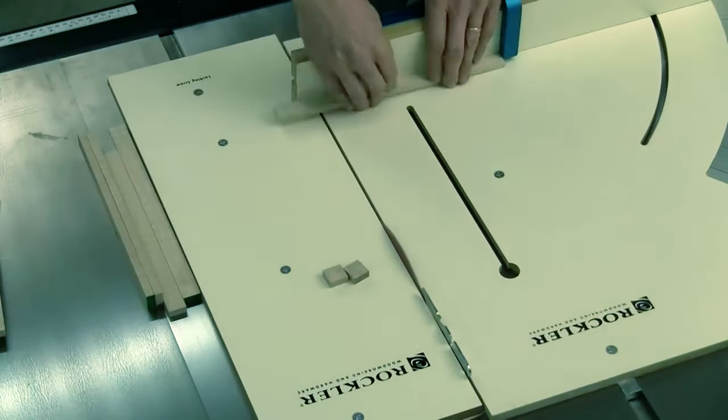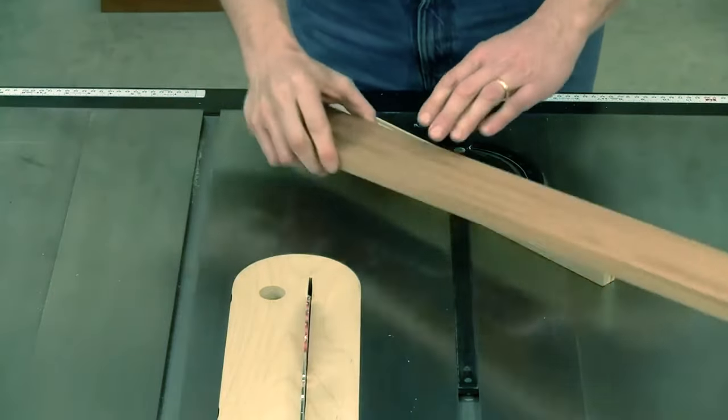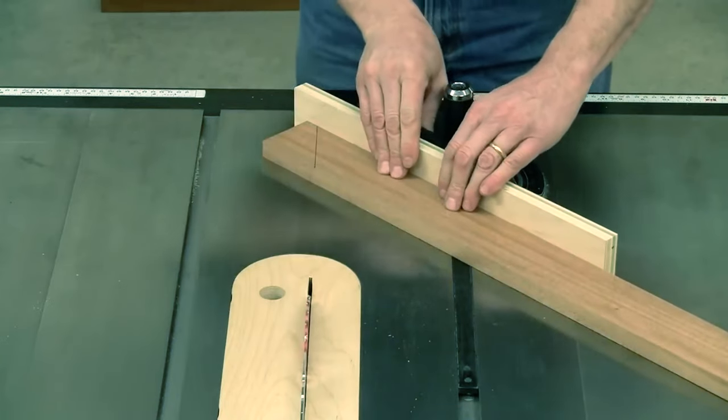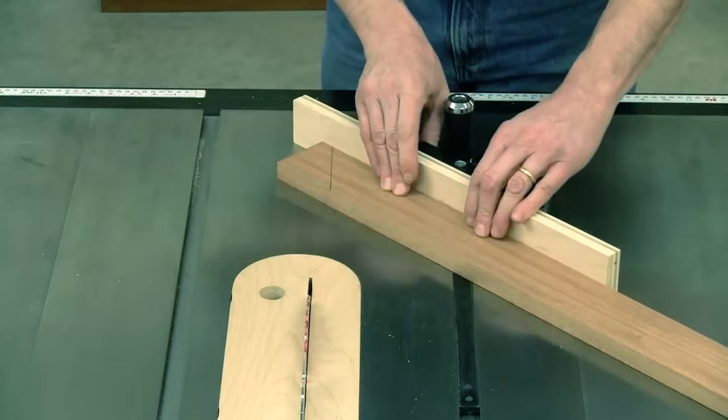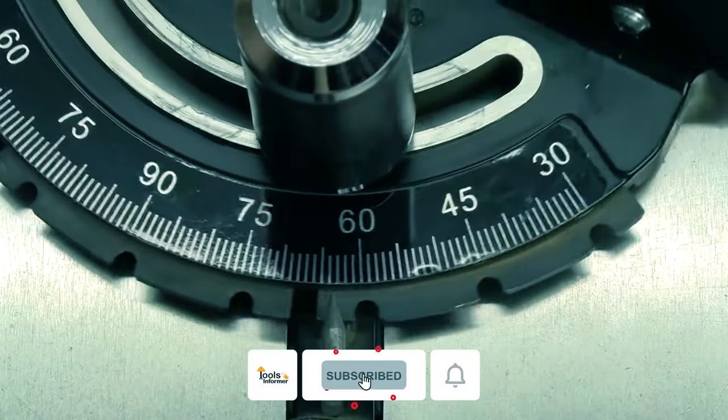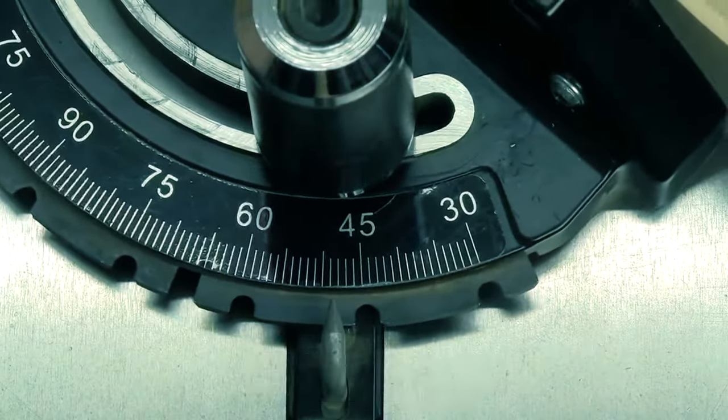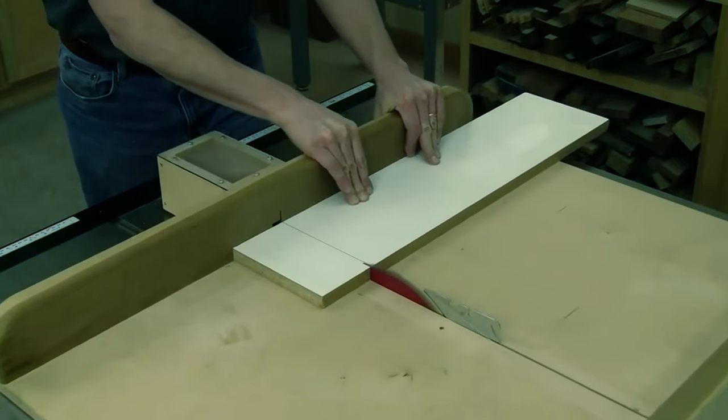Built for constant repetitive use, the durable aluminum sled won't swell or absorb moisture. It fits most woodworking table saws, making it a versatile addition to your workshop. With a miter track stop for controlled forward travel, this sled is a game changer for precision cutting.